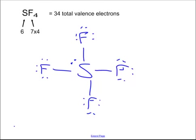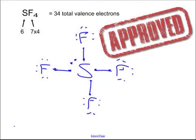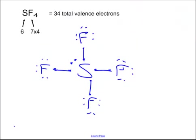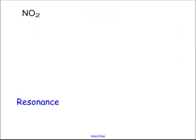Now let's see if the central atom has an octet. Sulfur has one, two, three, four, five, six, seven, eight, nine, ten — sulfur has more than an octet. Remember, if we have exactly an octet or more than an octet, we're done. If we have less than an octet, we steal from the outside atom and make double or triple bonds. And that is Lewis dot structures.